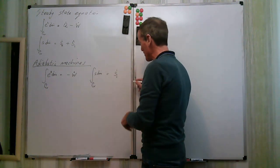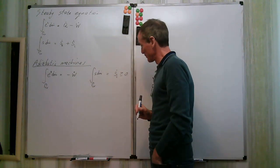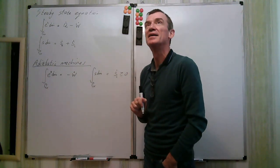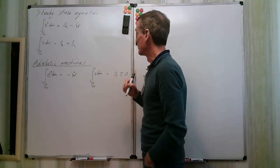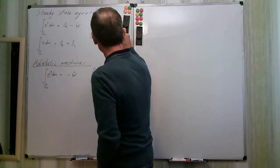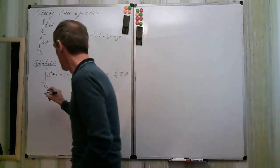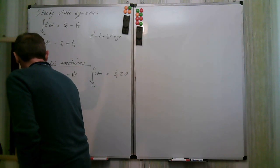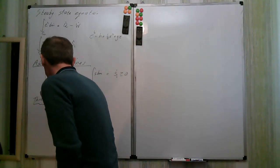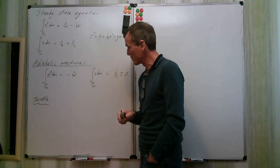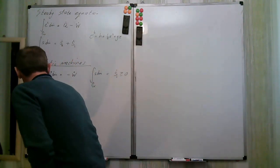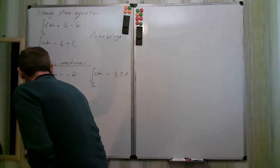Since S-i-dot is positive, we know entropy increases — but we can't quantify it directly without properties. Let's now look at each machine in turn. First, the throttle — essentially a valve or small orifice or porous plug — which produces a pressure drop across it.